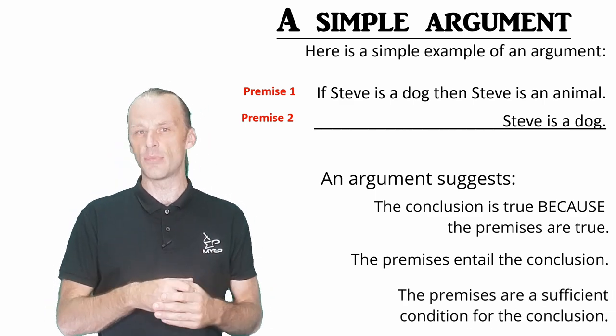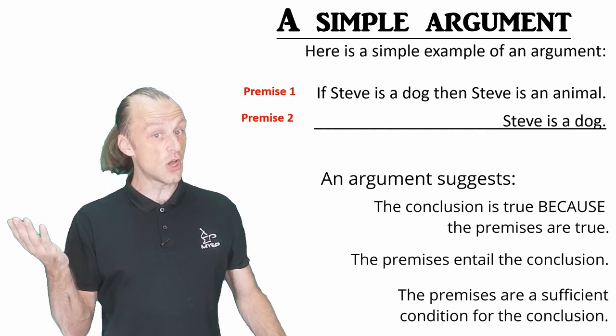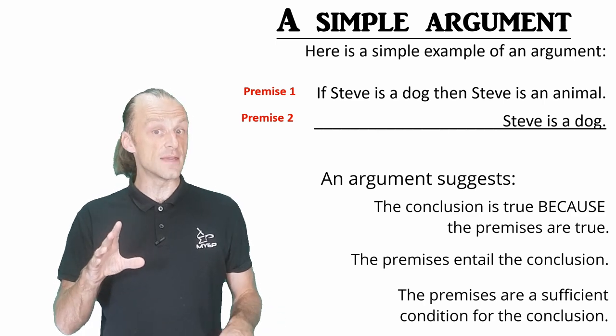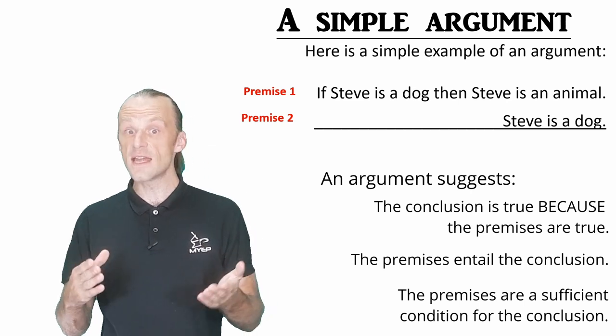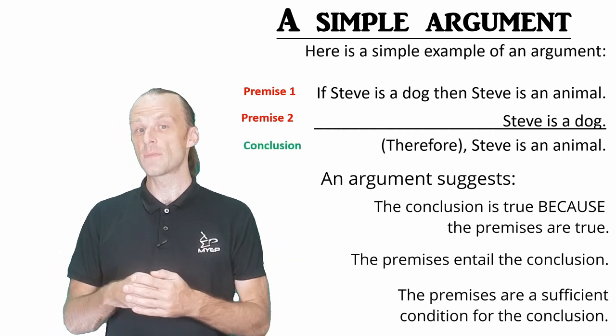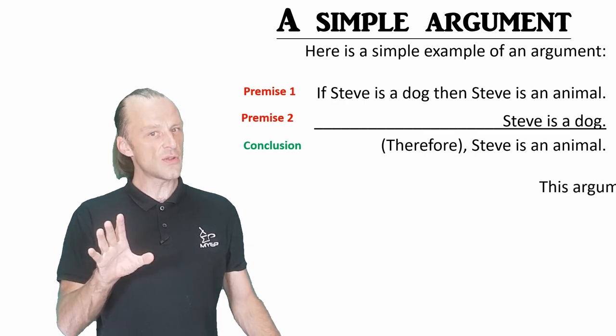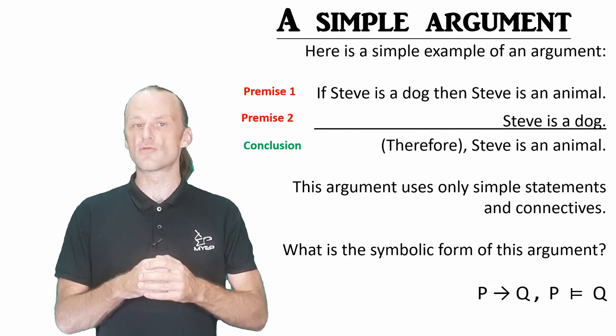Here is a very simple example. Premise one claims that if Steve is a dog, then Steve is an animal. Premise two claims that Steve is a dog, and from this we would conclude that Steve is an animal. How would you write this argument in symbolic form? Pause if you want to think about that. In fact, this is how we would write this argument.